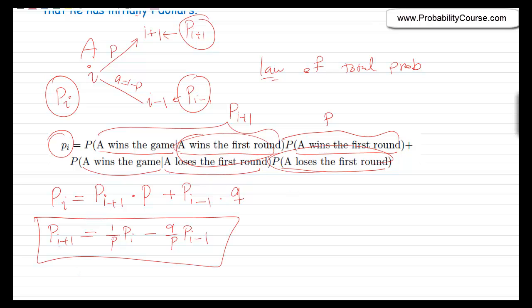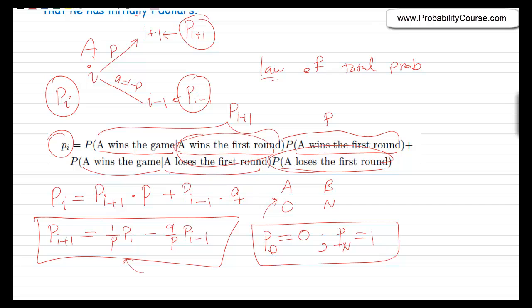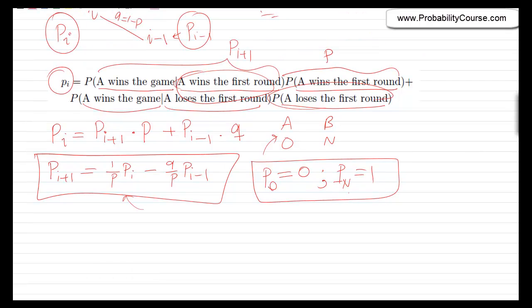That is our recursive equation — P(i+1) in terms of P(i) and P(i−1). In the special case that A starts with 0 dollars, A is the automatic loser, so P(0) = 0. And the probability that A wins given he starts with N dollars equals 1, because B has no money and A is the automatic winner. Using these two boundary values and the recursive equation, we can find all values of P(i).